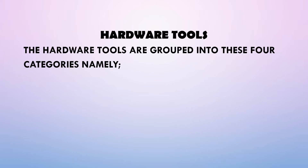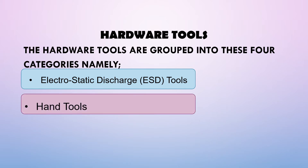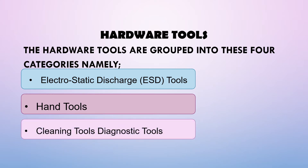To complete hardware repairs, it is important to have a toolkit that contains all of the necessary tools. As you gain experience, you will learn which tools to have available for different types of jobs. Hardware tools are grouped into four categories: first, ESD or electrostatic discharge tools; second, hand tools; third, cleaning tools; and fourth, diagnostic tools.